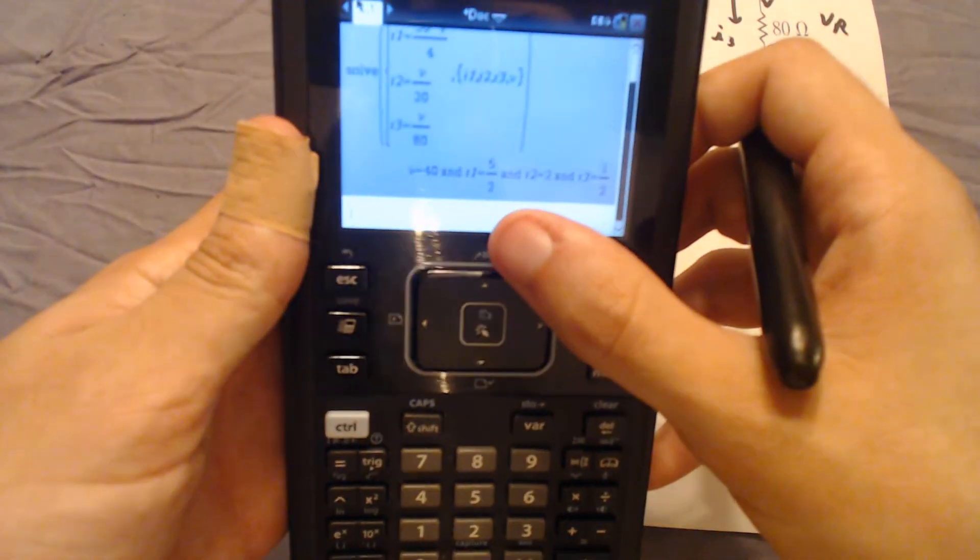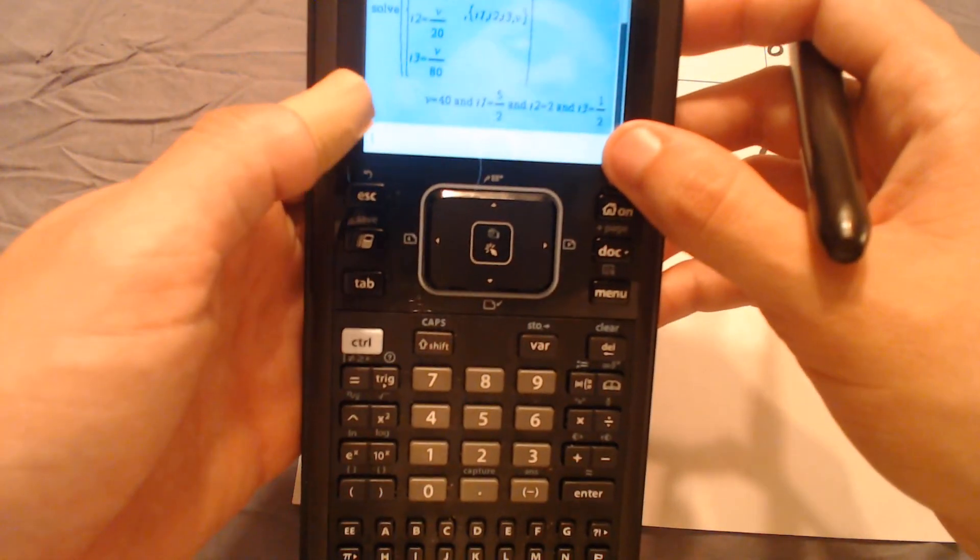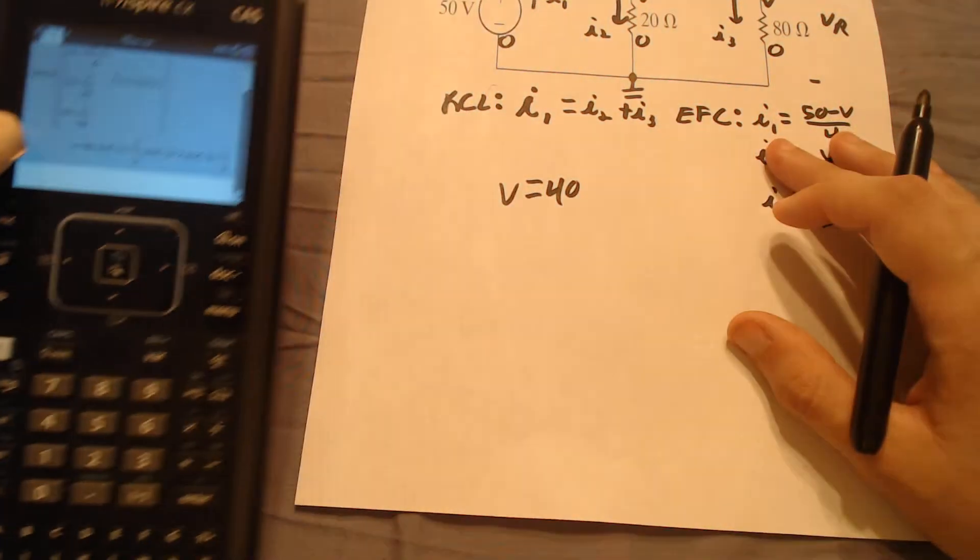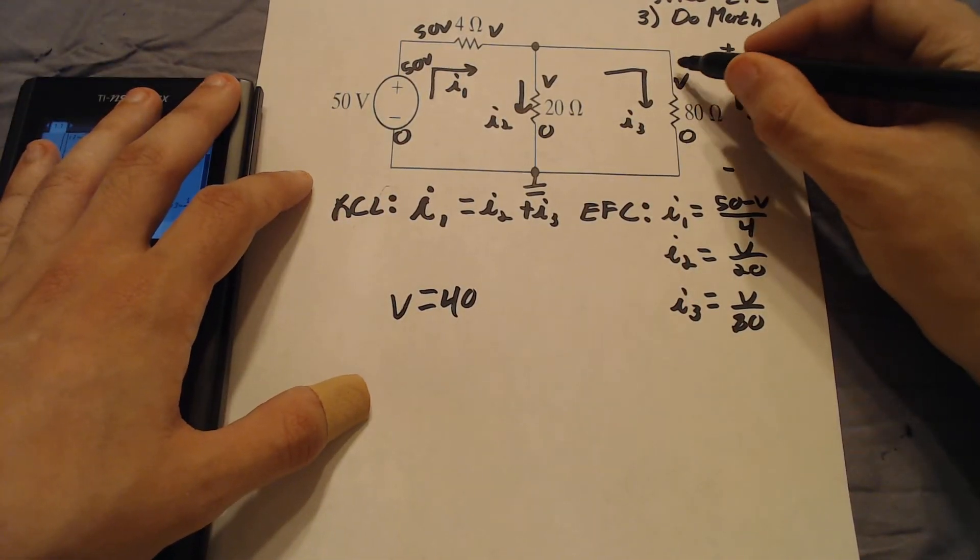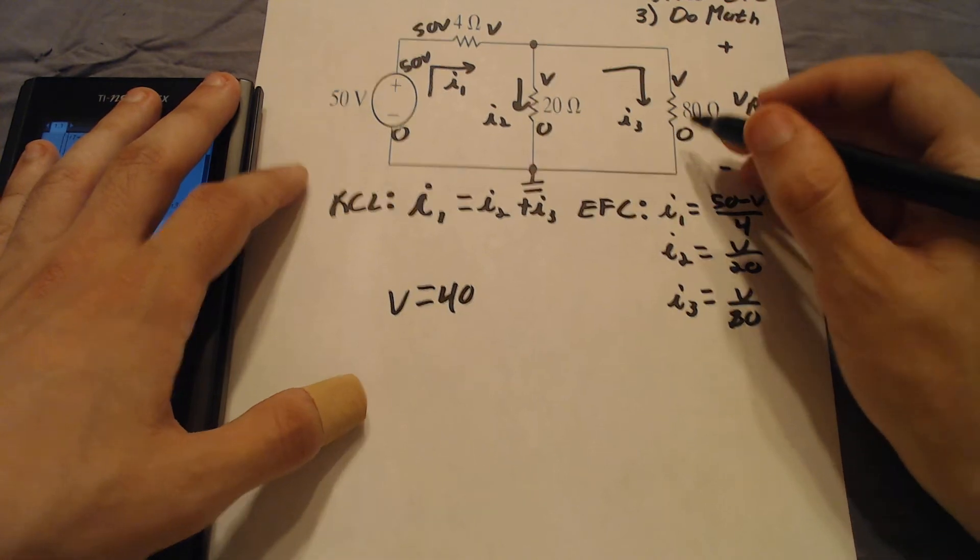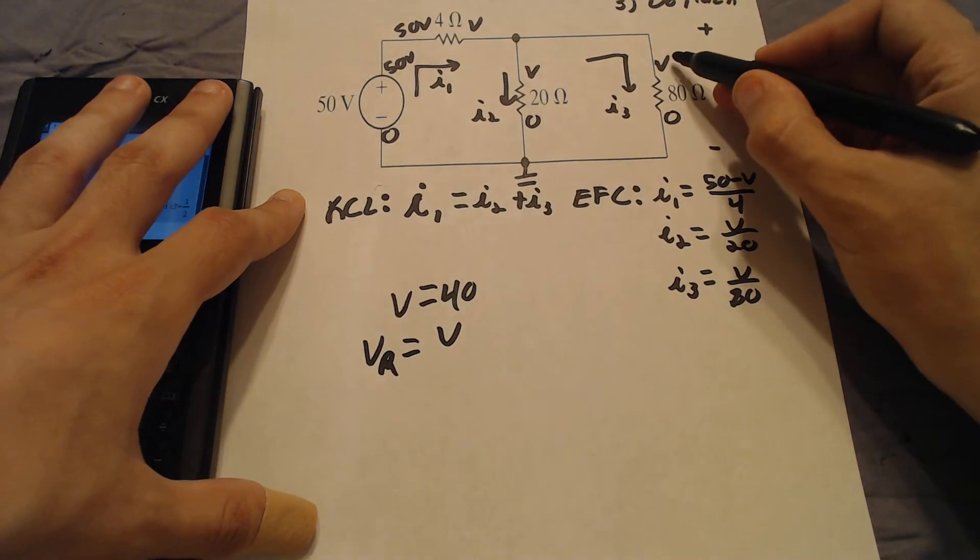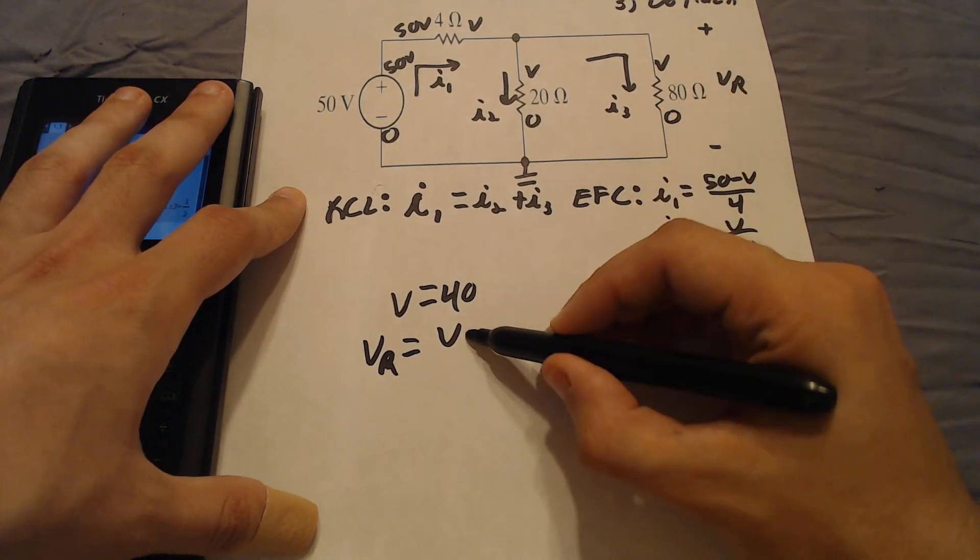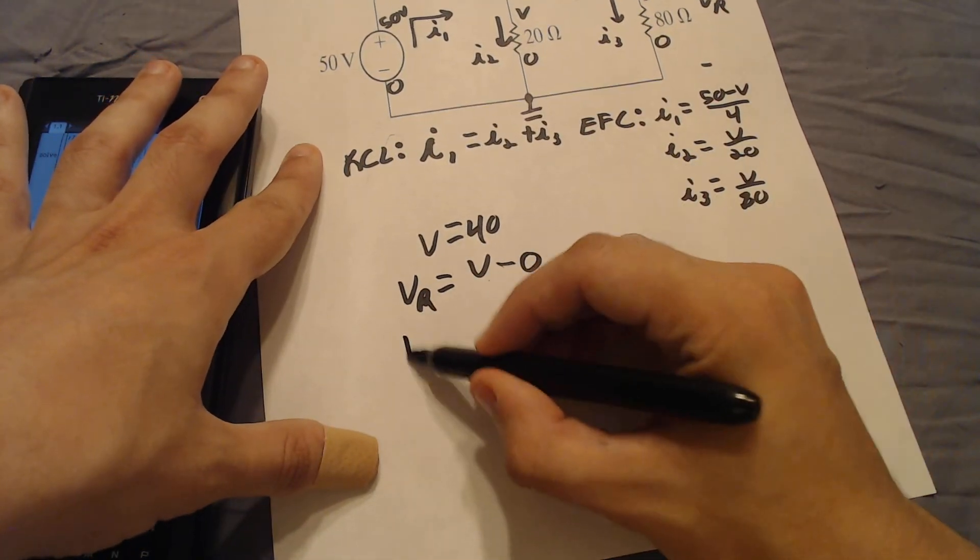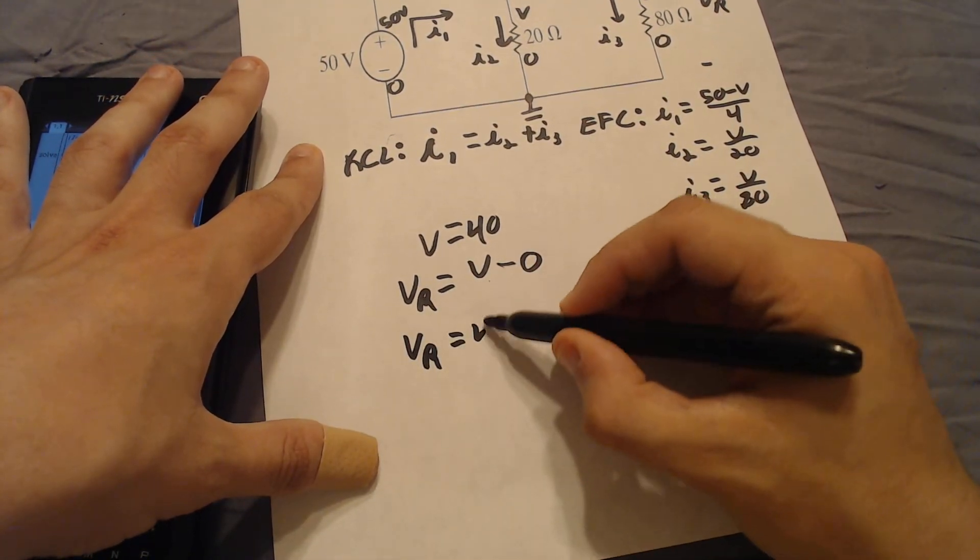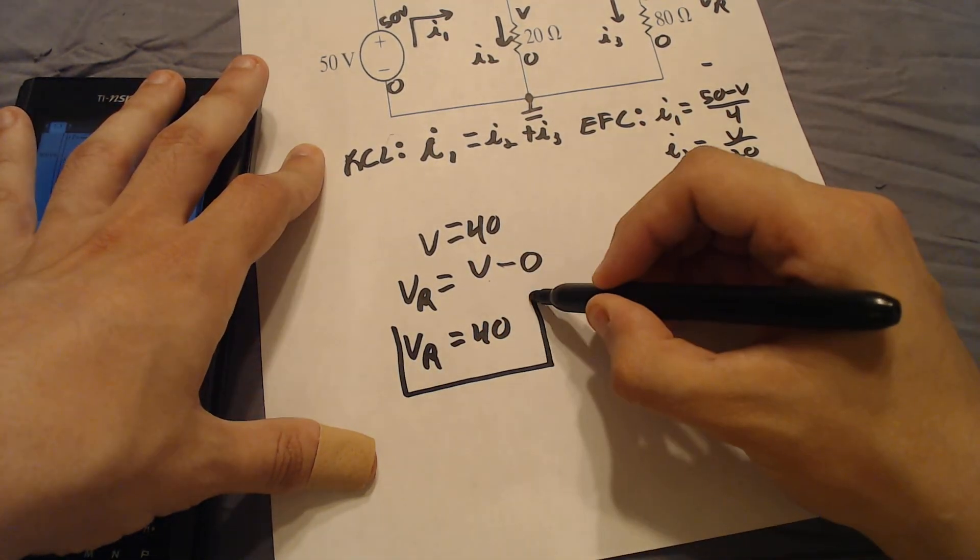It also gave me the numerical values for all the currents that I fed to it, but we don't care about that for this problem because we're trying to find a voltage in this circuit. So if we look back, we said that Vr is going to be equal to whatever voltage is up here minus whatever voltage is down here. So I write that down again, Vr is going to be equal to V, which is this voltage up here, minus zero, which is this voltage down here. We know what V is, so we just fill in our unknowns, 40 minus zero, that's still 40. So our final answer would end up being 40.